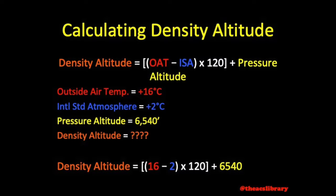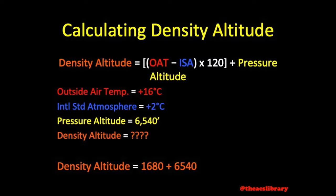We can plug that value in now. Next, perform the calculation: 16 minus 2 is 14. 14 times 120 equals 1,680. 1,680 plus our pressure altitude of 6,540, and voila, we are left with our expected density altitude of 8,220 feet.